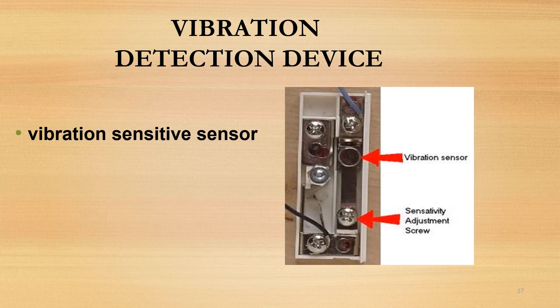Vibration detection device — the vibration-sensitive sensor is attached to walls, ceilings, or floors of the protected areas. The sensor detects any vibration caused by attempted forced entry.